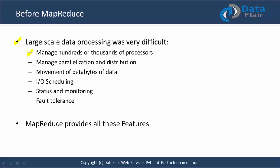These are the issues people were facing before MapReduce came into the picture. It was very difficult to manage parallelization and distribution of data as well as algorithms. Movement of petabytes of data was not really manageable. Apart from that, IO scheduling, status and monitoring of work going on in parallel was very difficult.